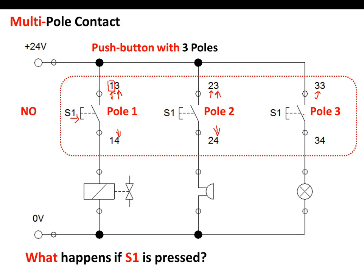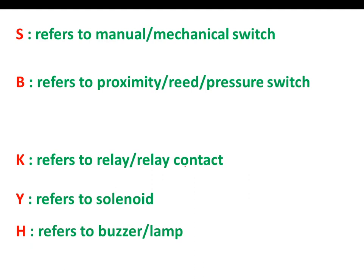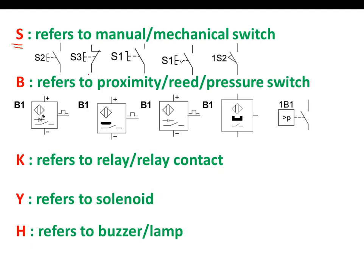We need to be familiarized with the new symbols in electro-pneumatics. S refers to any manual or mechanical switch — whether normally open, normally closed, set button, or roller lever valve. B refers to any proximity switch such as optical switch, inductive switch, capacitive switch, reed switch, and pressure switch. K refers to relay coil and relay contact. Y refers to the solenoid, while H refers to a buzzer or lamp.